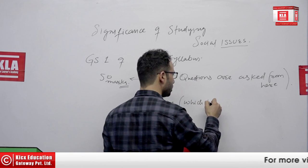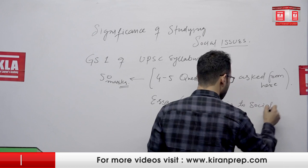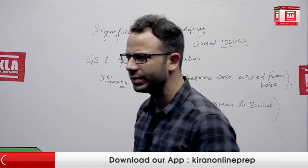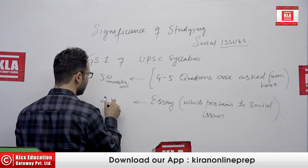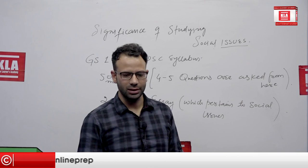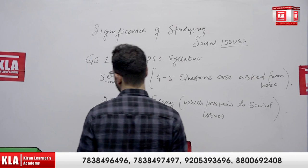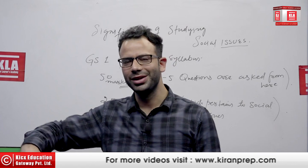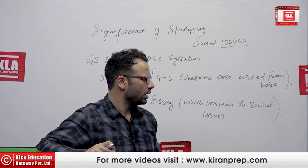There is always an essay which pertains to social issues — for example, women, education, religion, vulnerable groups, children. So the essay is another area where the significance of this social issues part, which is in GS1, becomes clear. And wherever you write — GS1, 2, 3, or 4 — there is always a social aspect to questions.